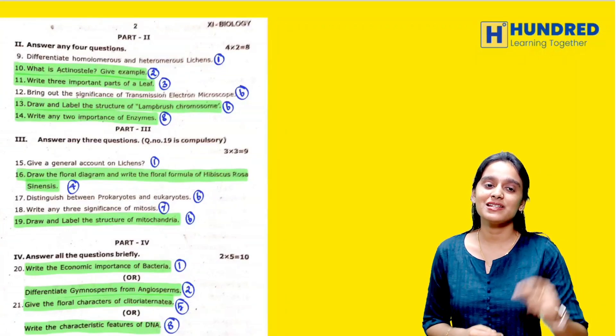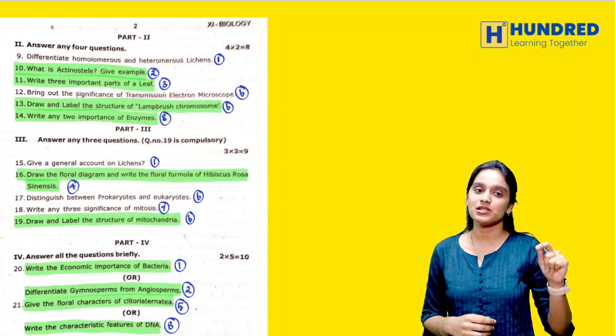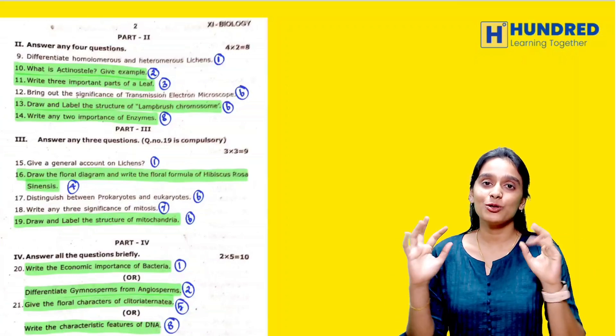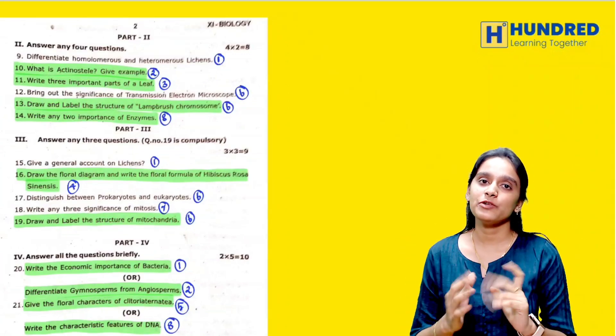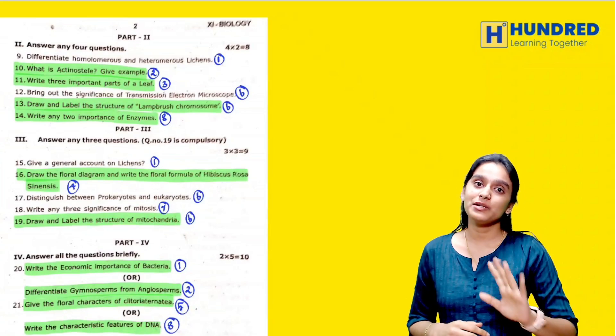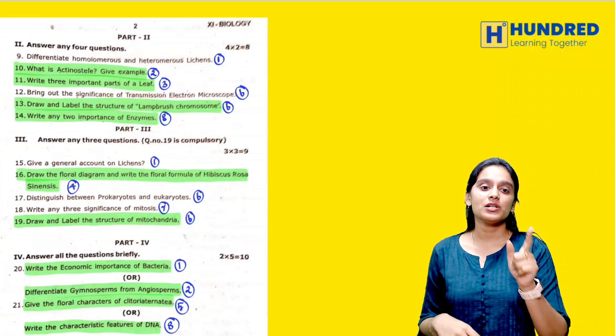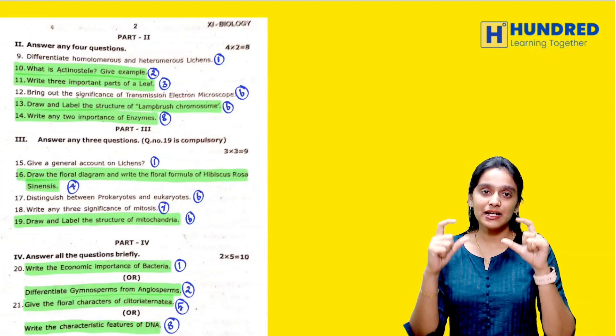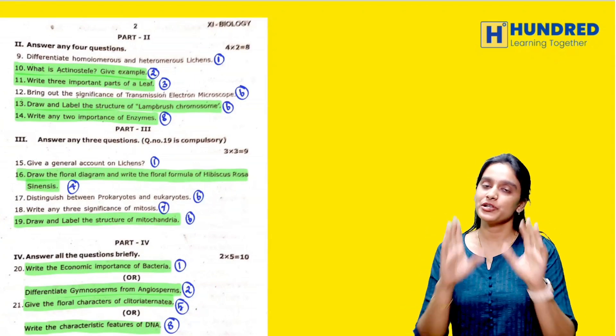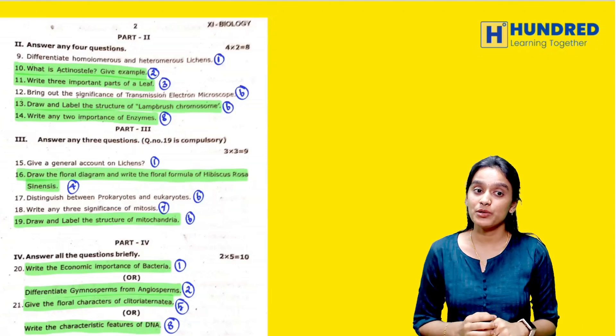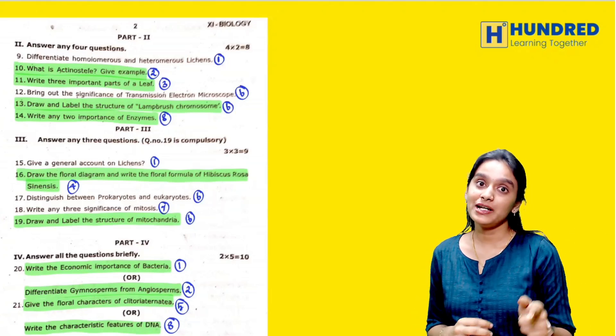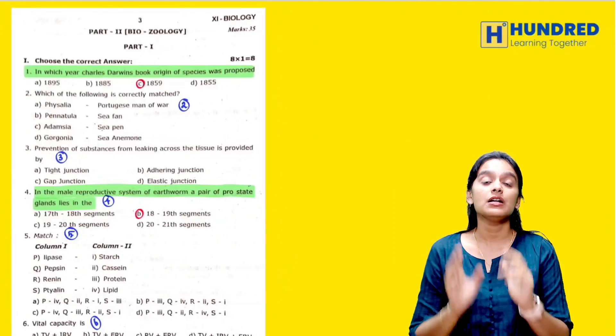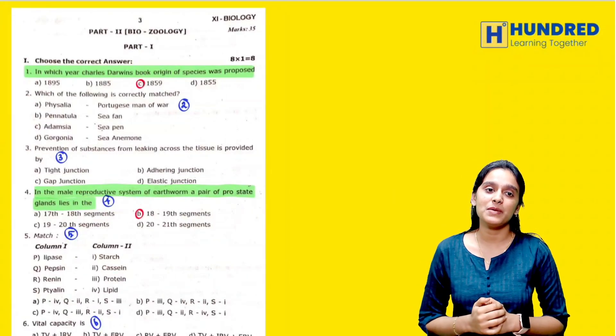In 5 marks it is very difficult because everything is book inside questions. Economic importance of bacteria, you have to attend 5 marks. Differentiate between gymnosperms and angiosperms, you have to attend tabulation. Floral characters and characteristic features of DNA. These are biobotany, now biosuology you have to attend.